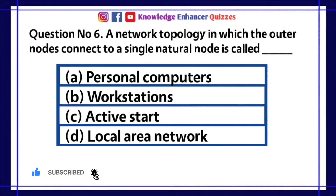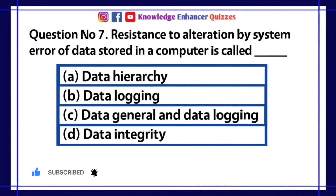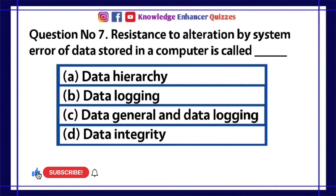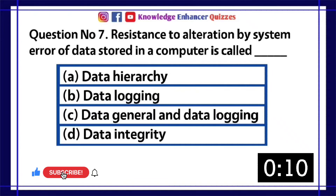Question number 7. Resistance to alteration by system error of data stored in a computer is called dash. A. Data hierarchy. B. Data logging. C. Data general and data logging. D. Data integrity.